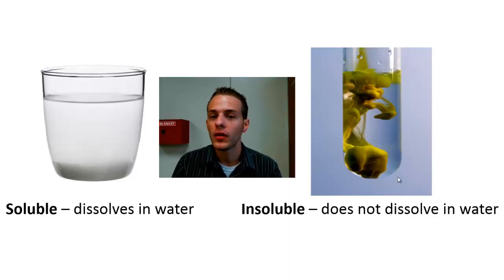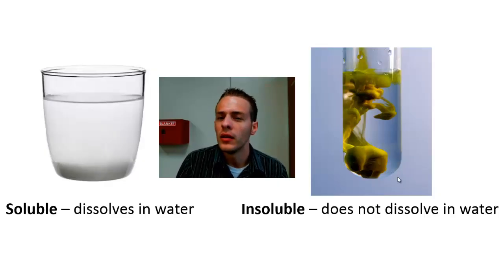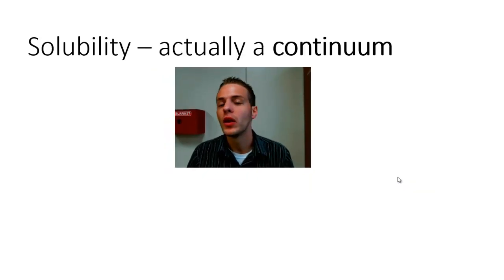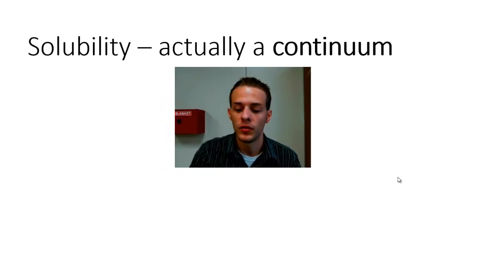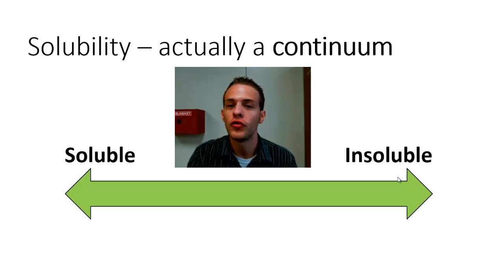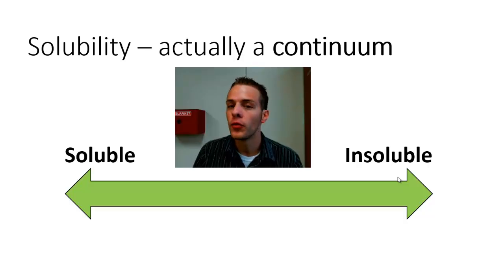The classification of soluble and insoluble is fairly useful, but it gives us the wrong idea about solubility — it isn't so black and white. Solubility is actually a continuum, a continuous spectrum, and soluble and insoluble are just two extremes within that continuum. Even compounds considered insoluble still dissolve to some extent, and there's usually a third category called slightly soluble.